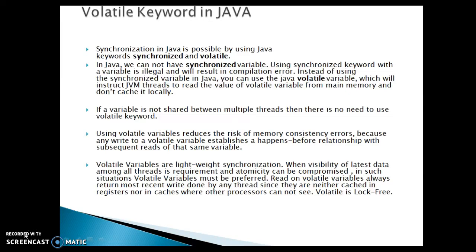Both keywords basically help you to make your code synchronized or thread-safe. But there are subtle differences between these two keywords. In Java, we cannot have a synchronized variable — using the synchronized keyword with a variable is illegal and will result in a compilation error. Instead, we can use a volatile variable, which will instruct JVM threads to read the value of the volatile variable from main memory and not cache it locally.